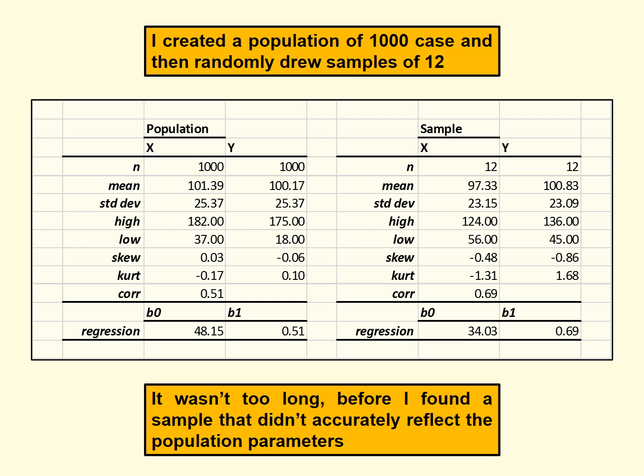You can see the little regression equation at the bottom there if you were trying to predict values of y based on values of x. Then I repeatedly had a function that would sample 12 cases at a time from that population of a thousand and make all those computations again — creating statistics for all those parameters. You can see on the right of the screen one example of one sample I got: 12 cases with means, standard deviations, highs and lows, skews, kurtosis, correlations, regression coefficients. By just repeatedly sampling, it wasn't long before I found samples that really didn't accurately reflect the population.